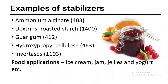Ammonium alginate, dextrins, roasted starch, guar gum, hydroxypropyl cellulose, and inositols are some examples of stabilizers. Ice cream, jams, jellies, and yogurt kind of products use stabilizers in their processing.